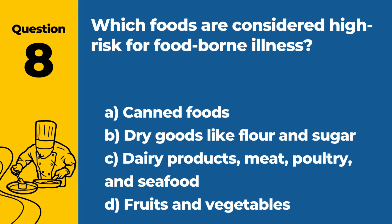Question 8. Which foods are considered high risk for foodborne illness? a. Canned foods. b. Dry goods like flour and sugar. c. Dairy products, meat, poultry, and seafood. d. Fruits and vegetables. Answer c. Dairy products, meat, poultry, and seafood. These are considered high risk for foodborne illness due to their susceptibility to bacterial growth.